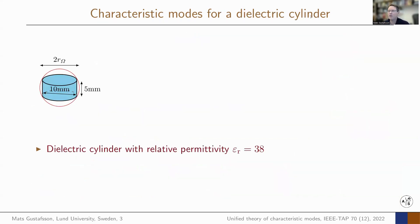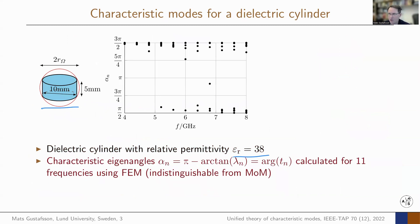To show one example, let's look at a dielectric cylinder with permittivity 38, with the sizes set up here. Solving this in 11 frequency points using finite elements, we get this plot of the characteristic eigenangles.